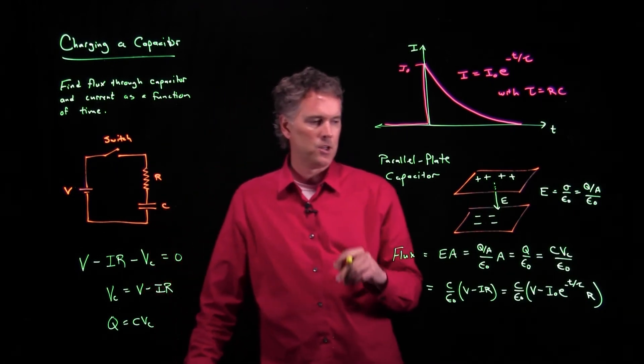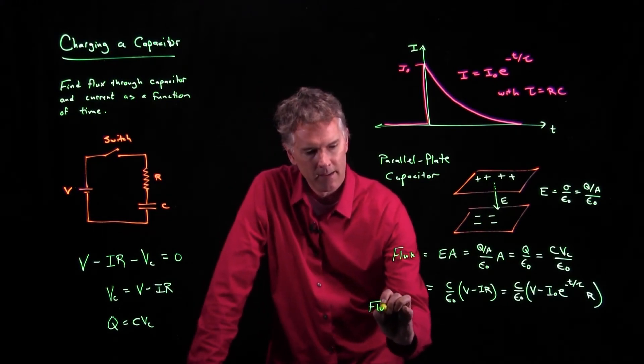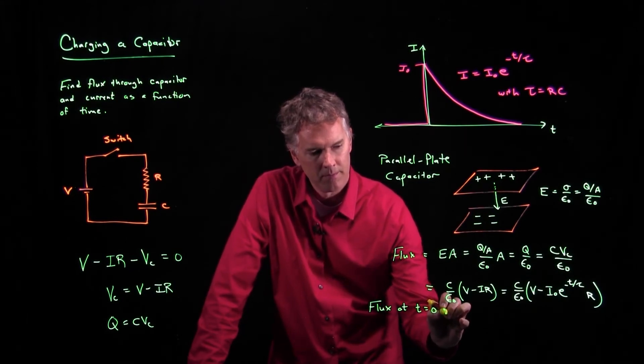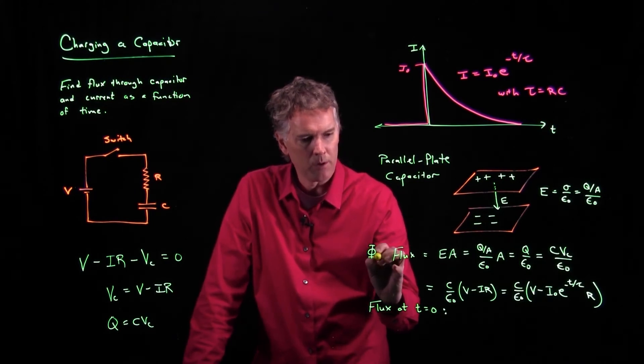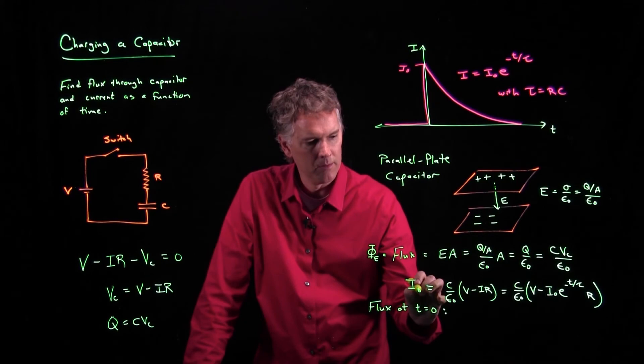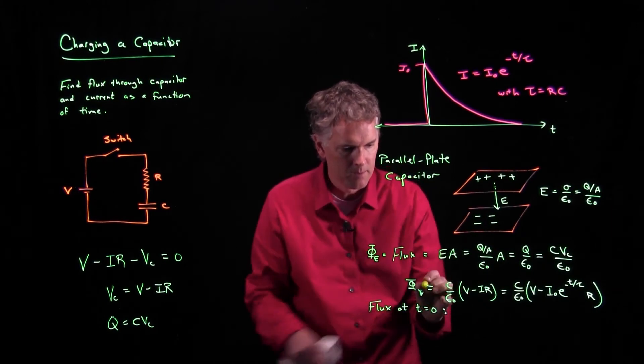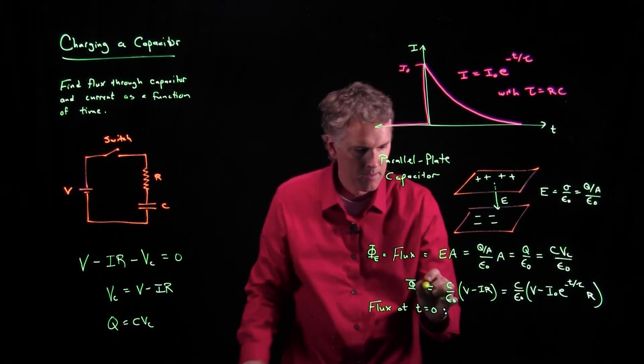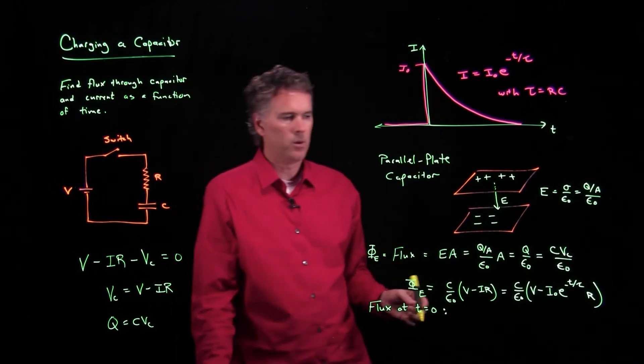Let's look at two extremes. What is the flux at T equals zero? And flux we usually write as a phi. We'll call it phi sub E for electric field. What is the electric field flux at T equals zero? Well, we just plug in.